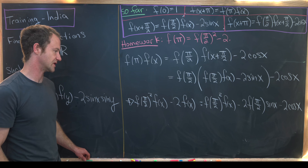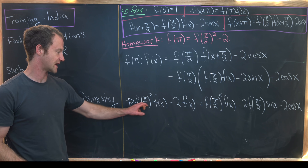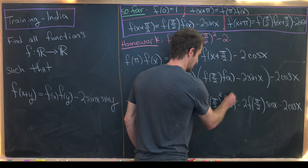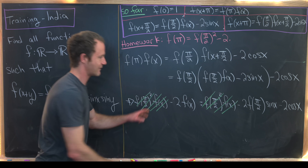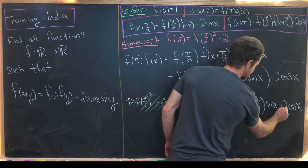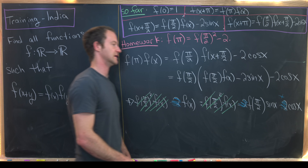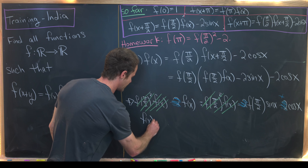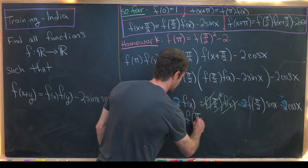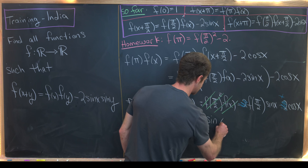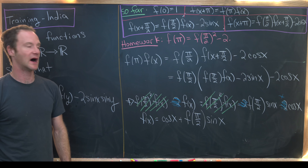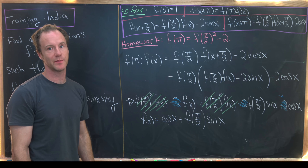Now let's see what simplification can be done. The term f(π/2)²·f(x) appears on both sides, so those cancel. There's also a factor of −2 on both sides that reduces, leaving f(x) = cos(x) + f(π/2)·sin(x). So now we need to determine what the possible values of f(π/2) are.